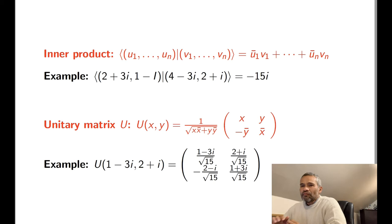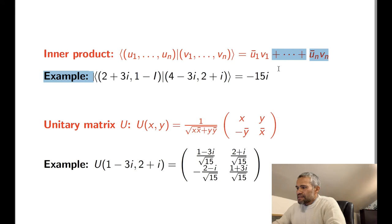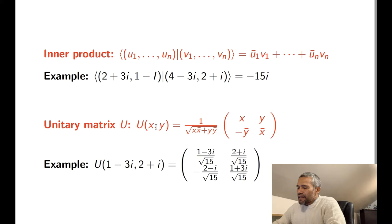Let me remind you the definition of inner product. We have two complex vectors, then the inner product is given by this formula. This is an example. We are going to define a unitary 2-by-2 matrix. Remember that every local gate acting on one qubit is given by a unitary 2-by-2 matrix. We are going to define U of (x, y), where x and y are a pair of complex numbers different from (0, 0). U of (x, y) is given by the matrix with entries x, y, negative y-bar, x-bar, normalized.